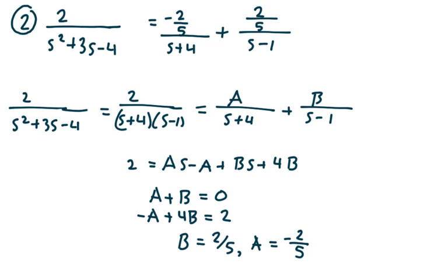Example 2. Suppose I'm given 2 over s squared plus 3s minus 4. This is a classic partial fraction decomposition. So I'm going to write 2 over s squared plus 3s minus 4, which equals 2 over (s plus 4)(s minus 1). Using partial fractions, this is equal to a over (s plus 4) plus b over (s minus 1). So 2 equals as minus a plus bs plus 4b.